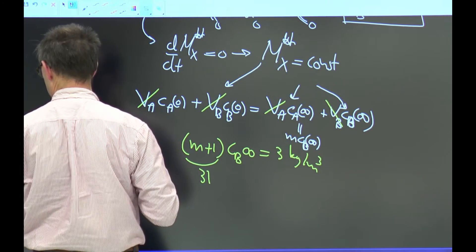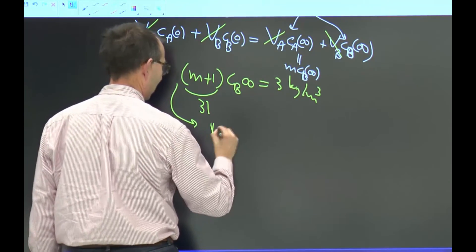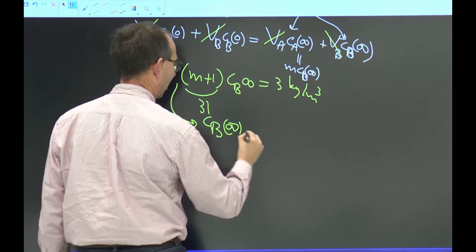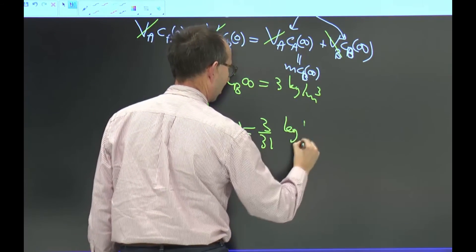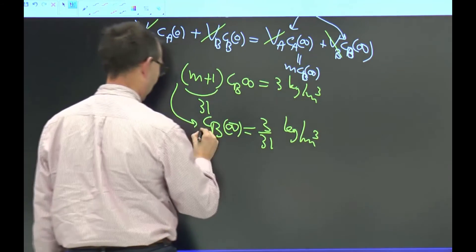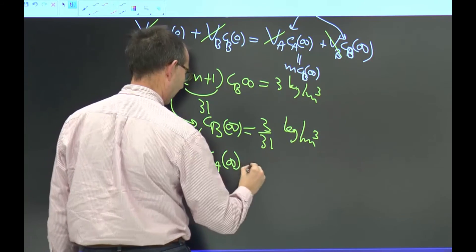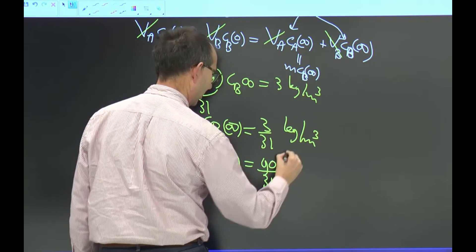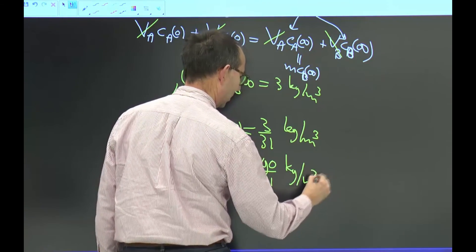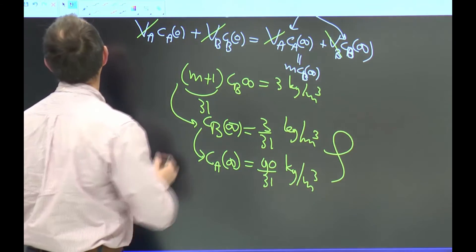And thus, slide this a little bit further. This I find CB infinity is 3 over 31 kilogram per cube. And hence, in A, 30 times as much is 90 over 31 kilogram per cube. And I've solved the second equation. Alright.